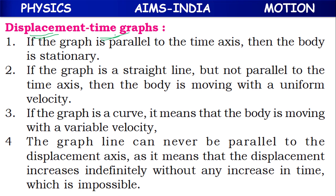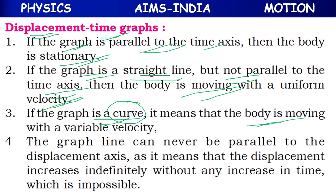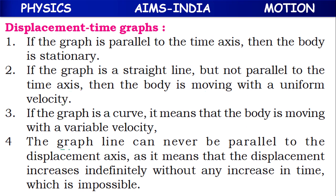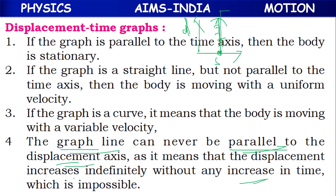For displacement-time graphs: if the graph is parallel to the time axis, the body is stationary. If the graph is a straight line but not parallel to the time axis, the body is moving with uniform velocity. If the graph is a curve, the body is moving with variable velocity. The graph can never be parallel to the displacement axis, because that would imply the displacement increases indefinitely without any increase in time, which is impossible.